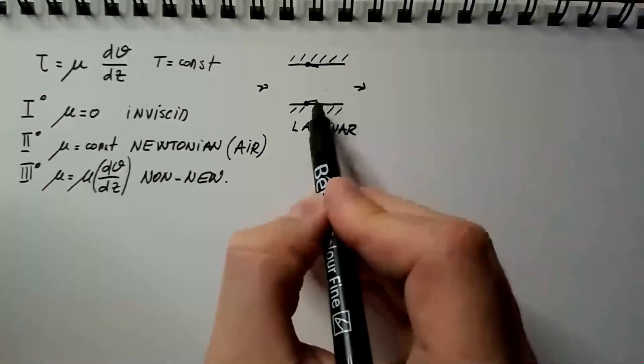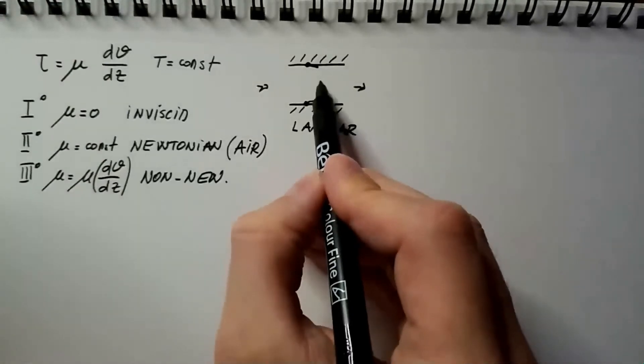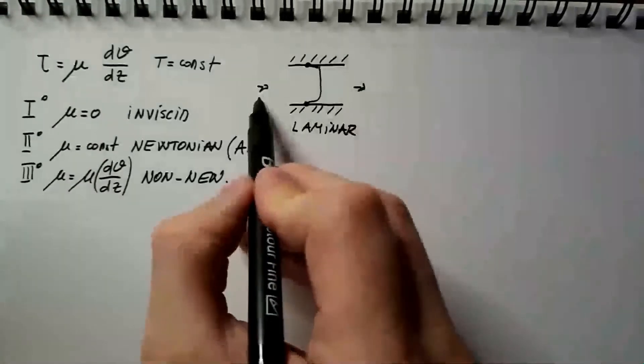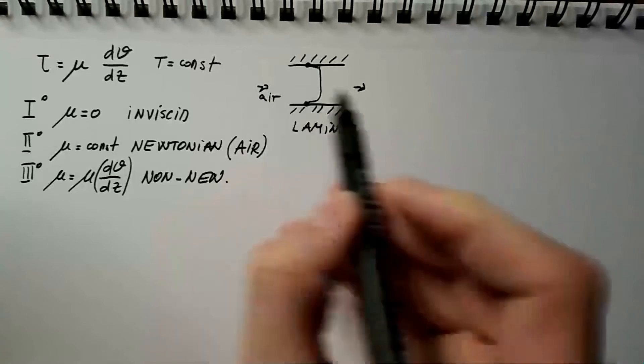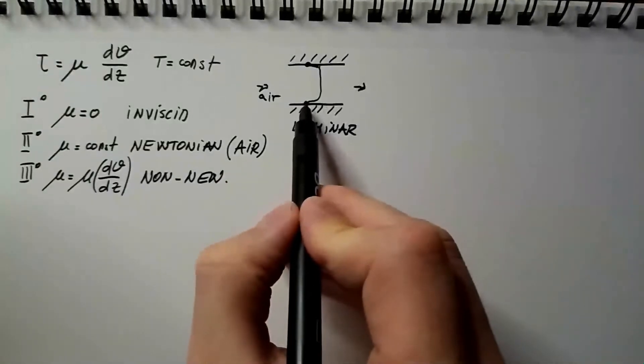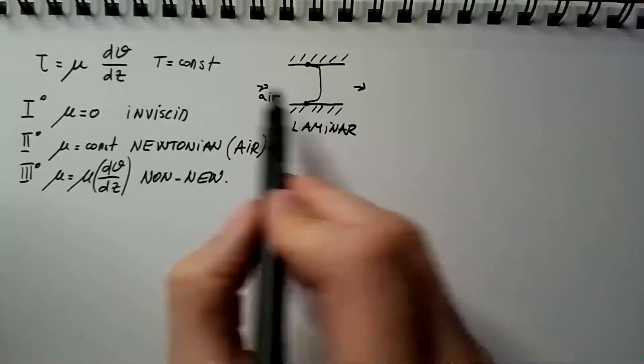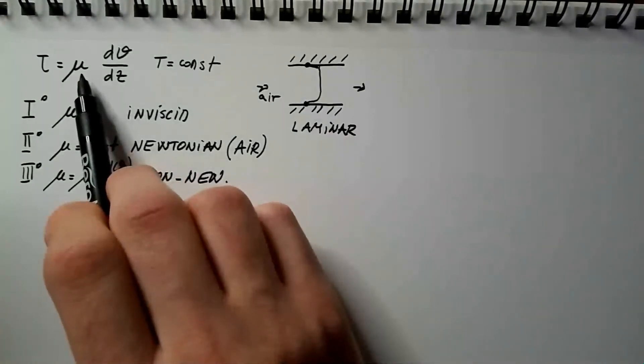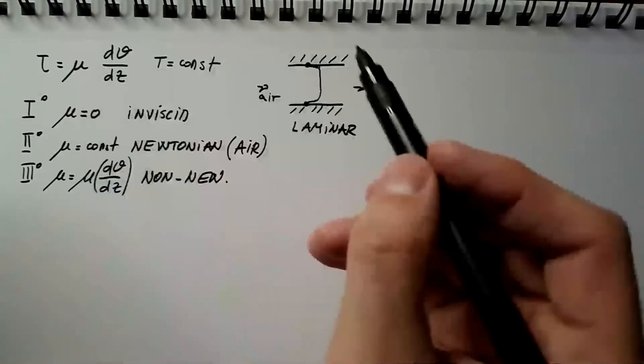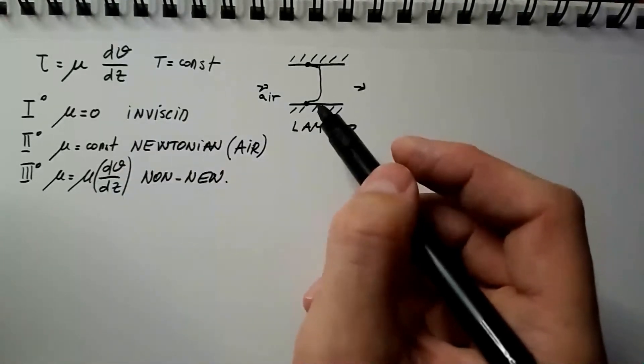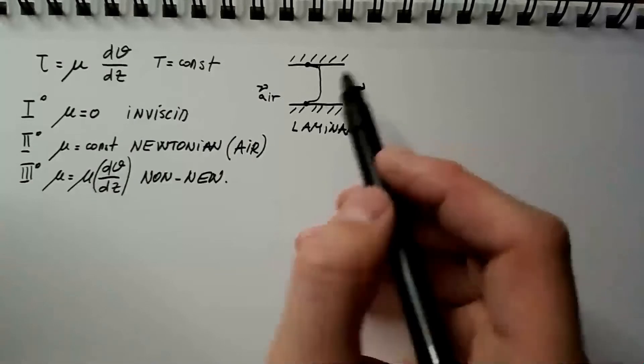So this would be perhaps the profile of velocity if this is, let's assume, air. Here, we see that we have very steep gradient of velocity, and the gradient is very steep because mu for air is indeed very, very small. It's order 10 to the power of minus 5 kilograms per meter per second.